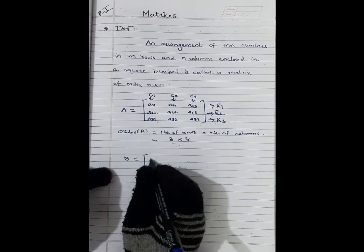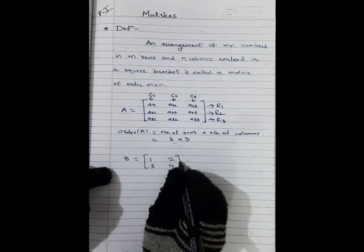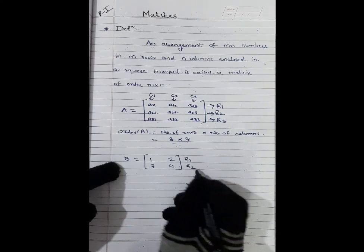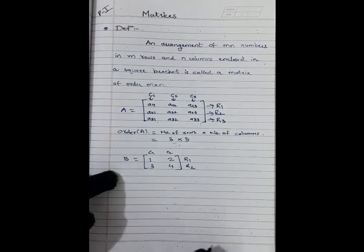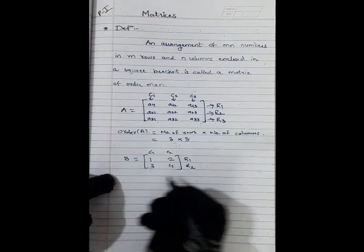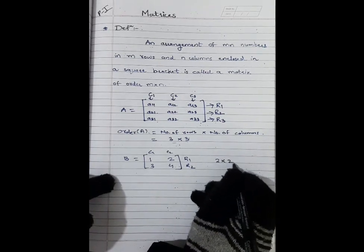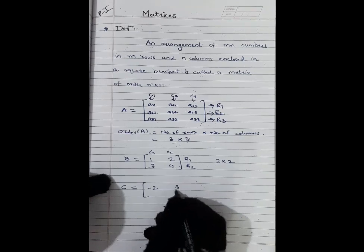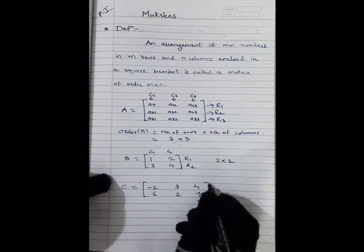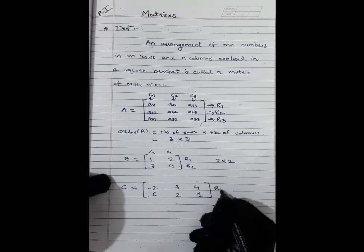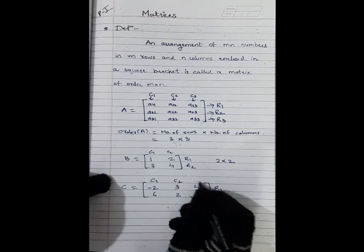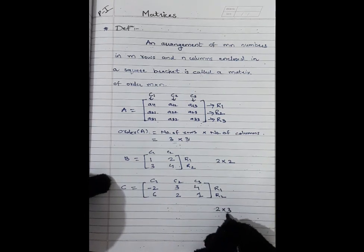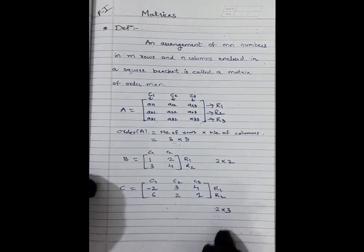For example, matrix B contains elements 1, 2, 3, 4 with two rows and two columns, so the order of matrix B is 2×2. Similarly, matrix C contains elements −2, 3, 4, 6, 2, 1 with two rows and three columns C1, C2, C3, so the order of matrix C is 2×3.